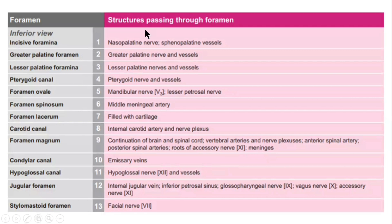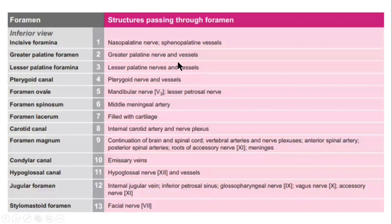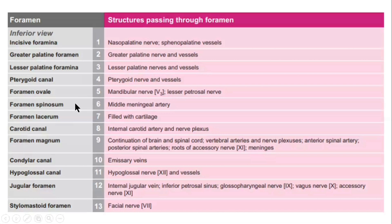The structures passing through foramina in the inferior view — norma basalis — are also largely present in the cranial cavity. In the inferior view, the incisive foramen passes the nasopalatine nerve and sphenopalatine vessels. The greater palatine foramen passes the greater palatine nerve and vessels. The lesser palatine foramen passes the lesser palatine nerve and vessels. The pterygoid canal passes the pterygoid nerve and vessels. Foramen ovale, spinosum, and lacerum are also present in this view. The carotid canal passes the internal carotid artery and nerve plexus.